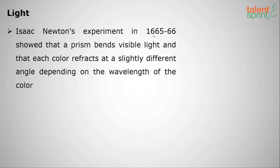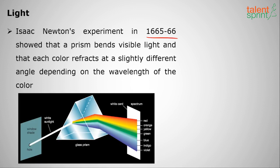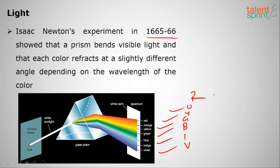Isaac Newton, in 1665–1666, showed that light is a blend of not just one color but many colors. He passed light through a prism and it dispersed into violet, indigo, blue, green, yellow, orange, and red — VIBGYOR. Single white light is constituted of these seven colors; that's our rainbow, depending on the wavelength of each color.